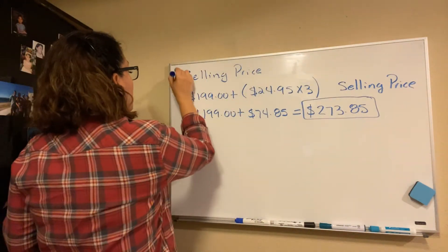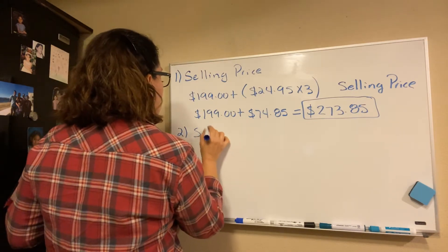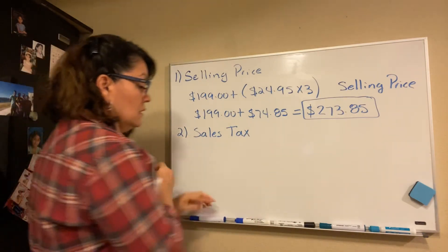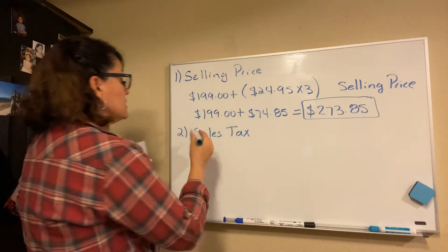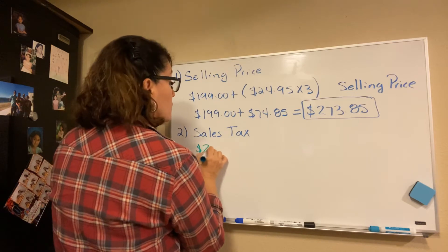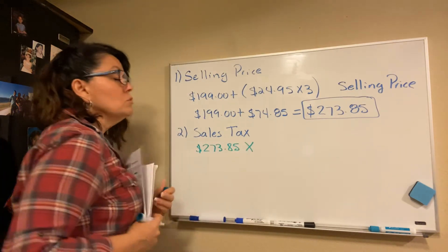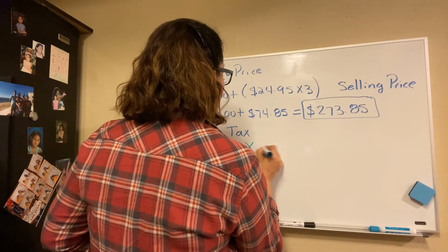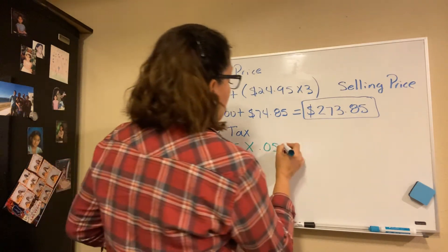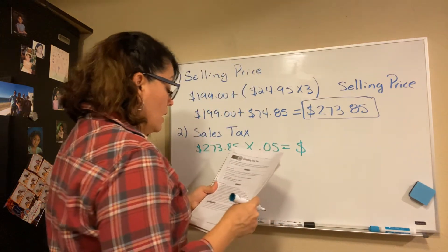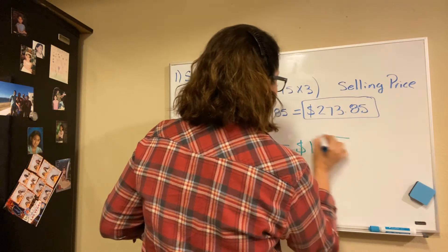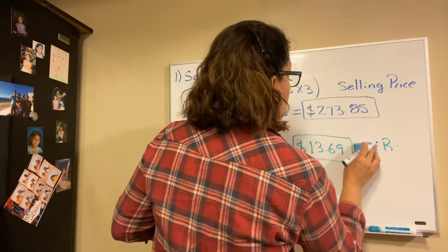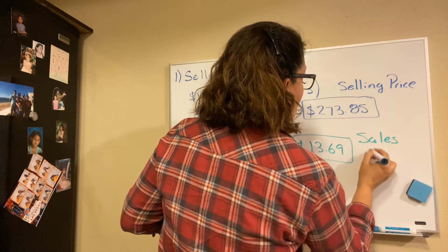To find the sales tax, we take the selling price of $273.85 and multiply it by the tax rate of 5% — that's 0.05. This gives us $13.69, and that is the sales tax.